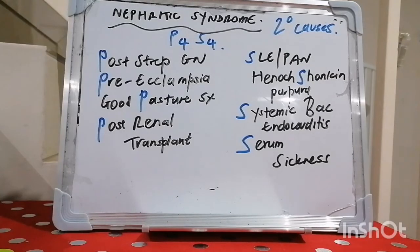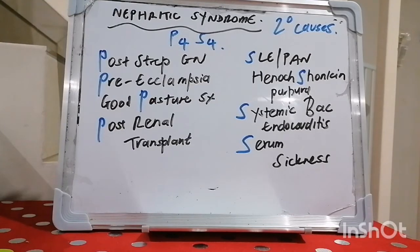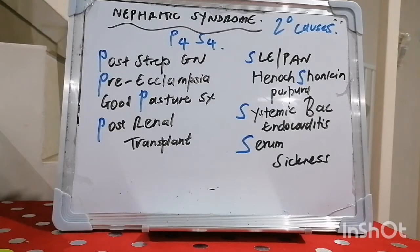In nephritic syndrome, the urine sediment shows dysmorphic red cells, white cells, and red cell casts. Albumin is markedly reduced in nephrotic versus nephritic. Creatinine is usually elevated in nephritic but may or may not be so in nephrotic. Serum sodium is diminished in both pathologies.